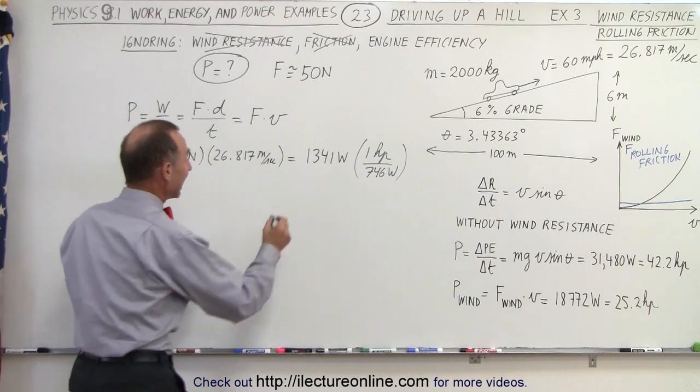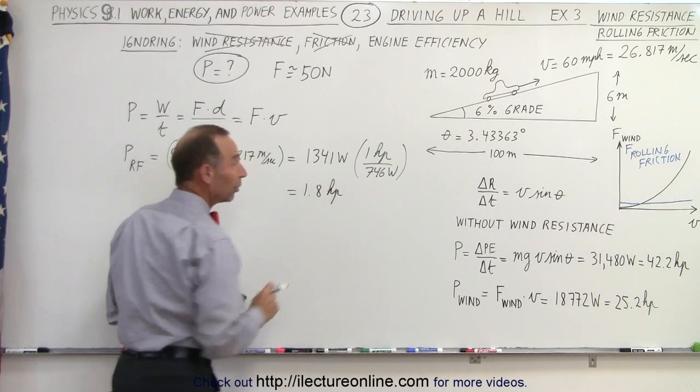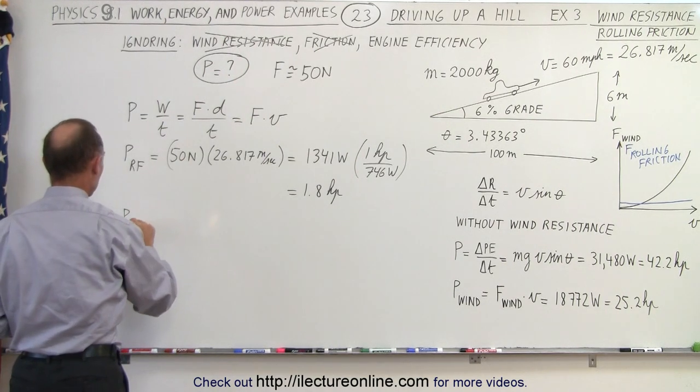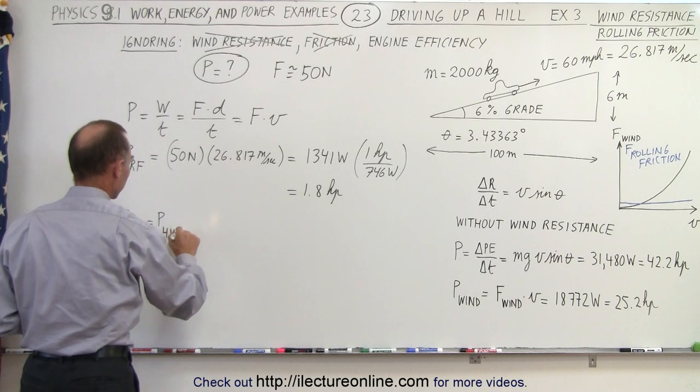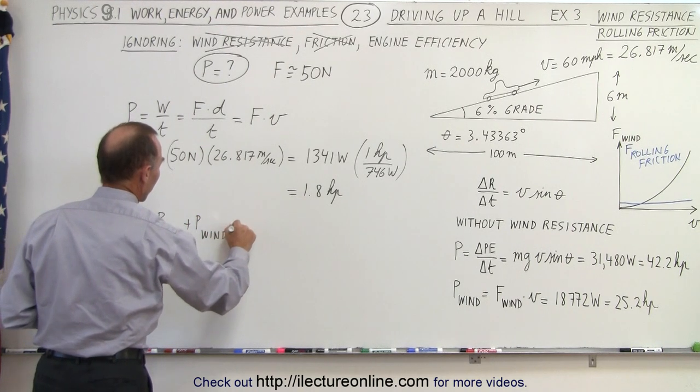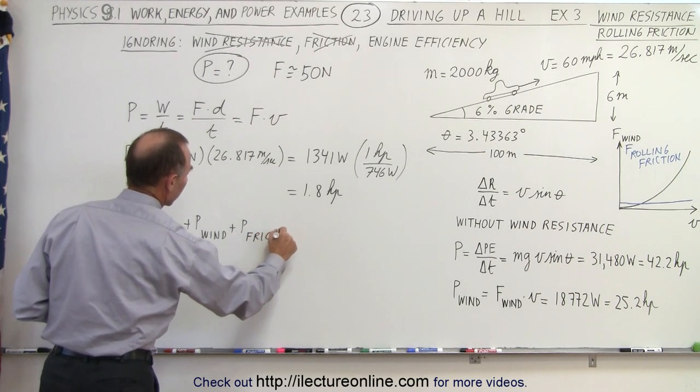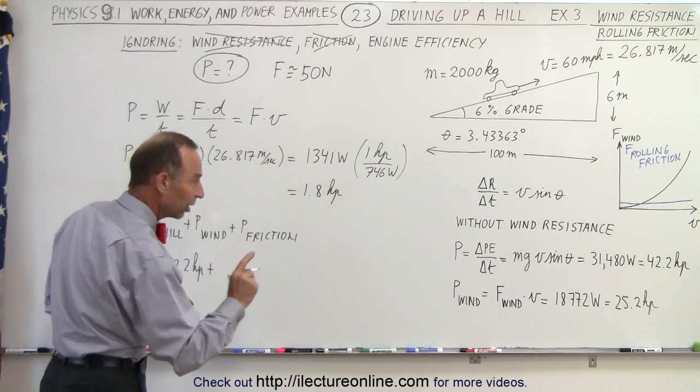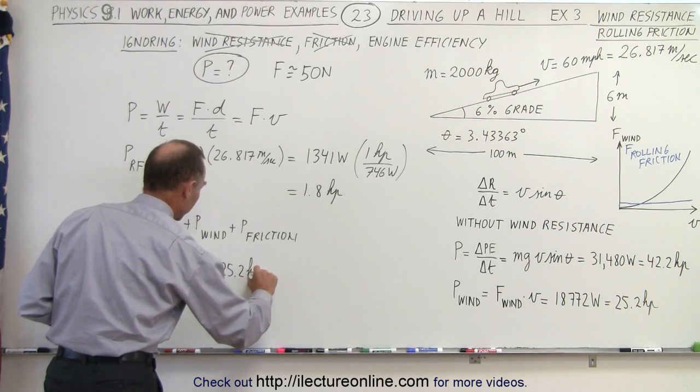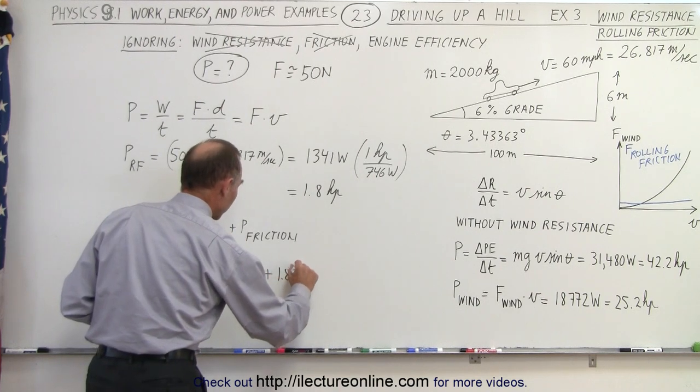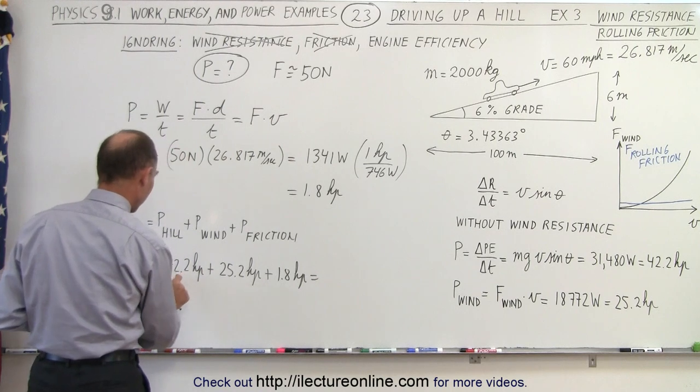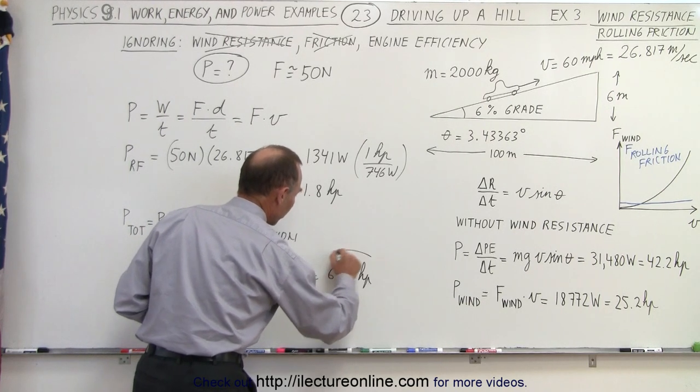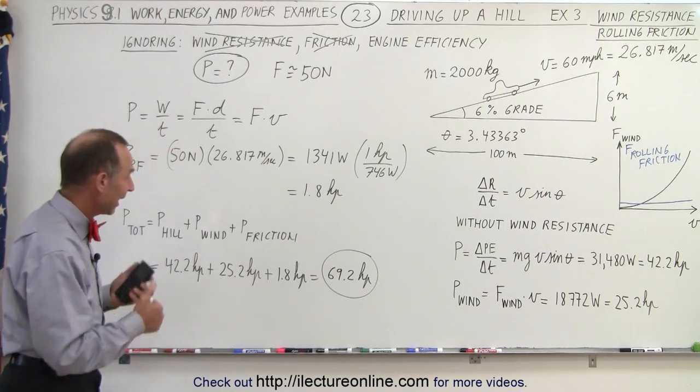Now the total power needed to drive up the hill, overcome wind resistance, and overcome friction is the power total, which equals power to overcome the hill plus power for the wind plus power for rolling friction. That becomes 42.4 horsepower to get up the hill, plus 25.2 horsepower to overcome wind resistance, plus 1.8 horsepower to overcome rolling friction, which equals 69.2 horsepower required.